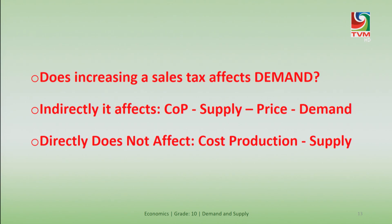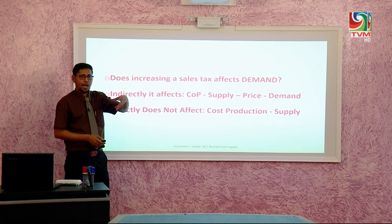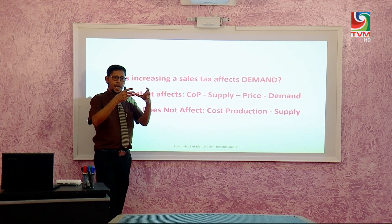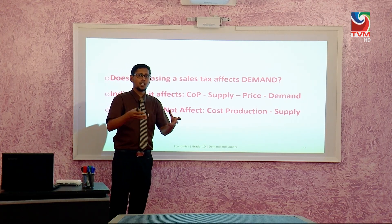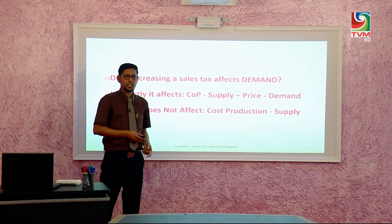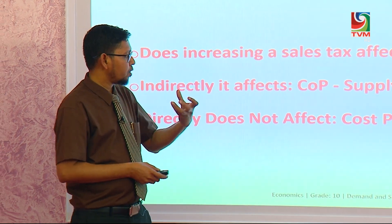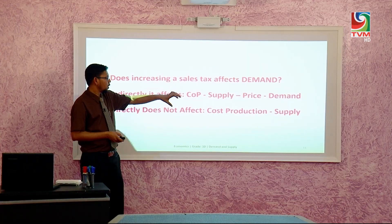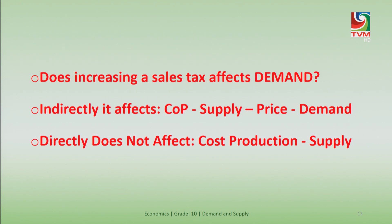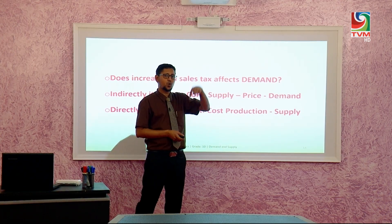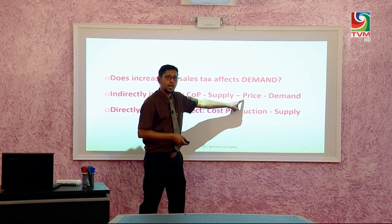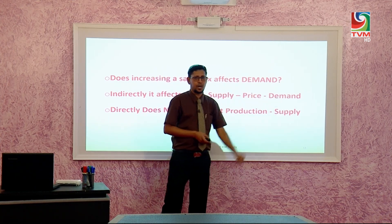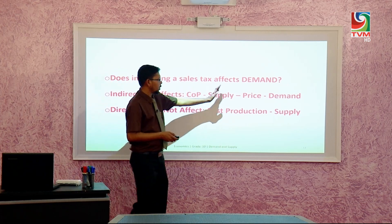Sales tax will affect the demand indirectly through cost of production, supply, and price. When a business has to pay more GST, they have less working capital because they have to pay more GST. When they pay more GST, their working capital will be lower. Because of that, they will be able to hire less labour, buy less raw materials, and produce less. So supply will be less. When the supply in the market decreases, we know it creates a shortage. Because of the shortage, the price will rise. When the price rises, there is a contraction of demand.